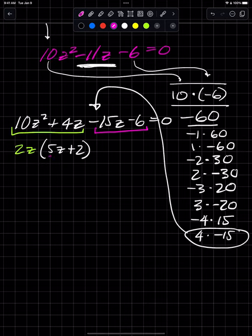When I group these two together, I'm going to factor out a negative 3 because I want a 5 in the front and it'll work out if it's factored by grouping. I'm going to factor out a negative 3, and I'm left with a positive 2.